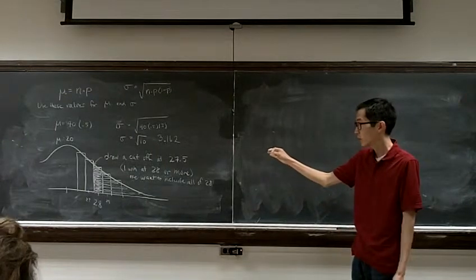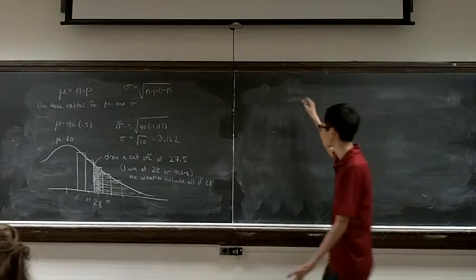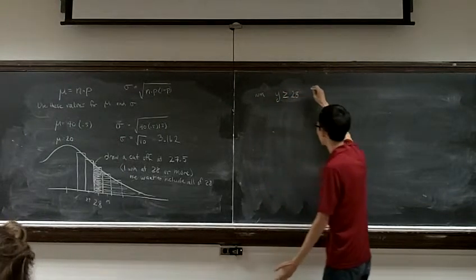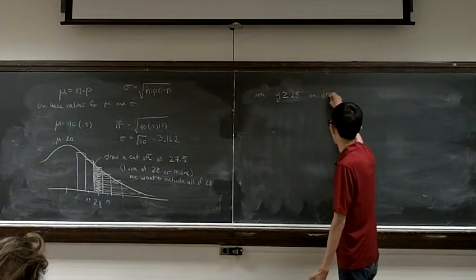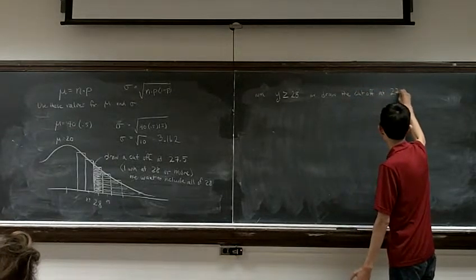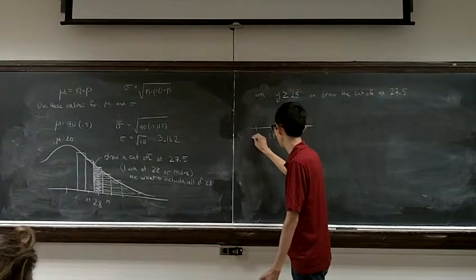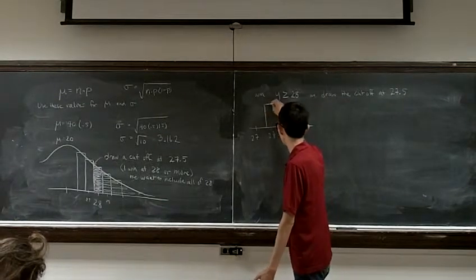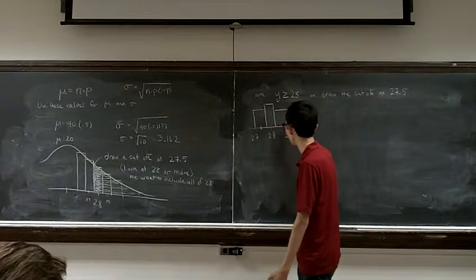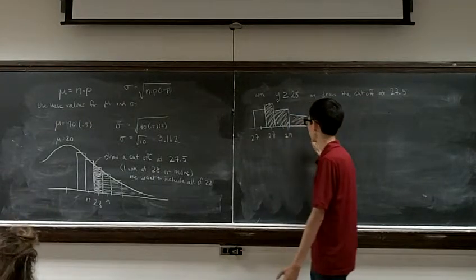So I draw my cutoff at 27.5. Because I will win if I get 28 or more. So we want to include all of 28. I know it's a little bit silly, but this is known as the continuity correction. And we use it whenever we're trying to approximate a discrete distribution with a continuous one. Because discrete, you can only take on these finite values. So with a continuous distribution, the continuous distribution assumes you can take everything on in between, but we can't. So this is the continuity correction.